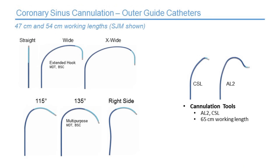The outer guide catheters: St. Jude models are wide, very wide, or various degrees. For right-sided implants there's a special right-sided catheter. The wide catheter in Medtronic or Boston is called the Extended Hook; about the 135 in St. Jude is the multipurpose. There are also cannulation tools — only St. Jude has these — including the AL2 or CSL that can fit through the catheter and give you a different shape to help engage the coronary sinus.